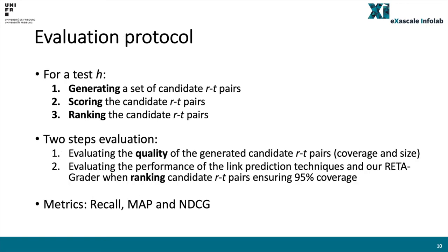To implement our instance completion task for our test head, we first generate a set of candidate relation-tail pairs, and then we score and rank them. We evaluate this task in two steps. First, we evaluate the quality of the generated candidate relation-tail pair sets, considering two metrics: the coverage of the candidate set, which is the percentage of the ground truth relation-tail pairs covered by the candidate set, and the size of the candidate set. A good candidate set should have higher coverage and a small size at the same time. Second, by fixing the set of candidate relation-tail pairs ensuring 95% of coverage using our RETA filter, we evaluate the performance of different link prediction techniques and our RETA grader when ranking these candidates, reporting Recall, MAP, and NDCG.